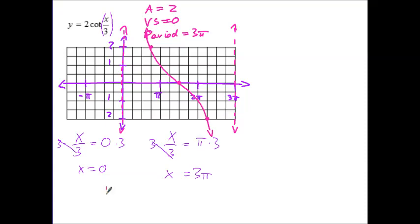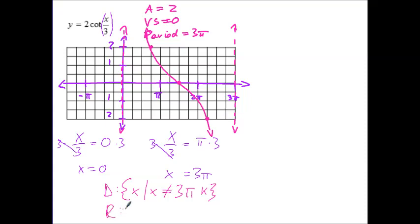What's the domain of our cotangent function? x such that x is not equal to 0 — we don't have to worry about that one. The next asymptote is at 3 pi, and every further 3 pi, that being our period, is going to be another asymptote. The range is equal to all real numbers.